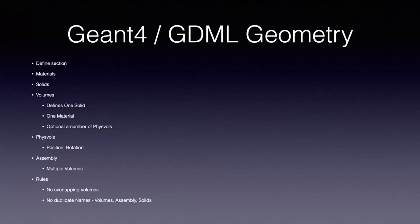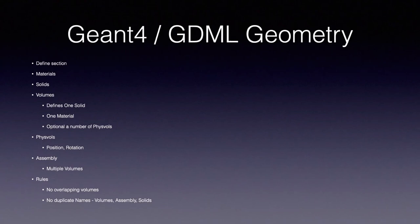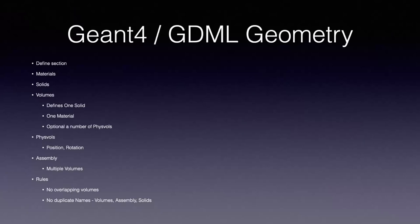Looking at the GDML geometry definition, you have a define section which defines various constants, positions and rotations. You have materials, which are quite different from FreeCAD's materials — these materials are defined in terms of their atomic properties. You have solids, which I will talk about in the following slide. You have volumes: a volume defines one solid and one material and has an optional number of physical volumes. The physical volumes define the position and rotation, so you could have a volume with four physical volumes and that volume would appear in four different locations. Assemblies are multiple volumes. There are various rules: no overlapping volumes, no duplicate names, etc.